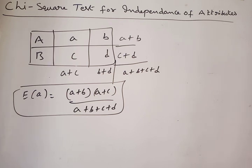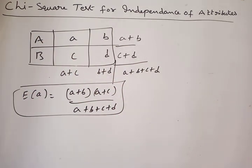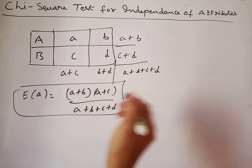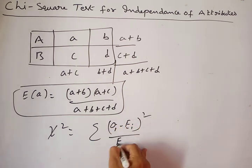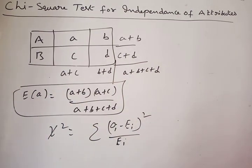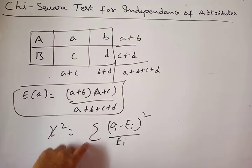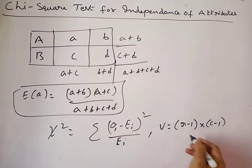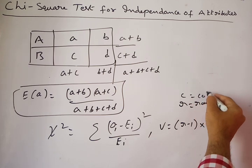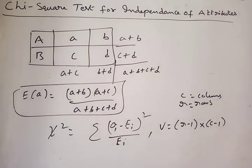Whenever data is classified in a two-way or three-way table, you use the chi-square test for independence of attributes. The chi-square test statistic formula is: χ² = Σ(Oᵢ − Eᵢ)² / Eᵢ. The degrees of freedom are ν = (r − 1)(c − 1), where r = number of rows and c = number of columns.